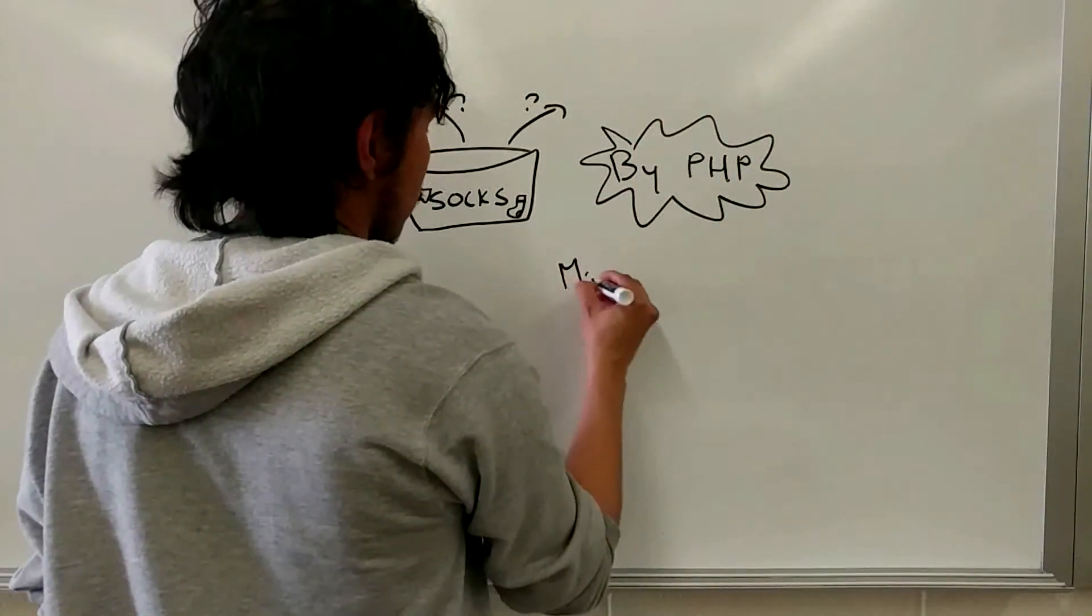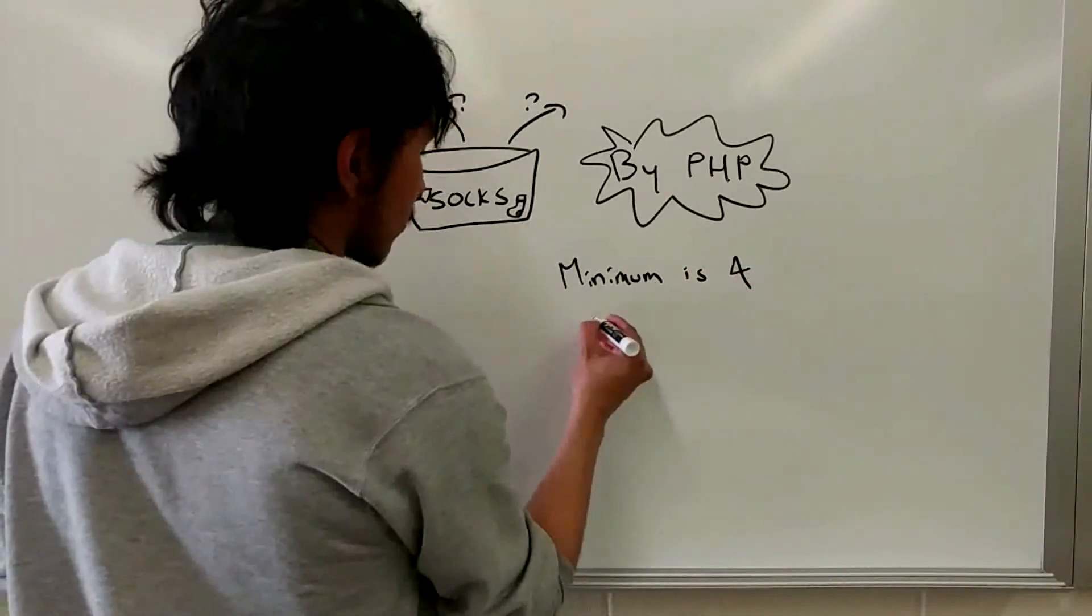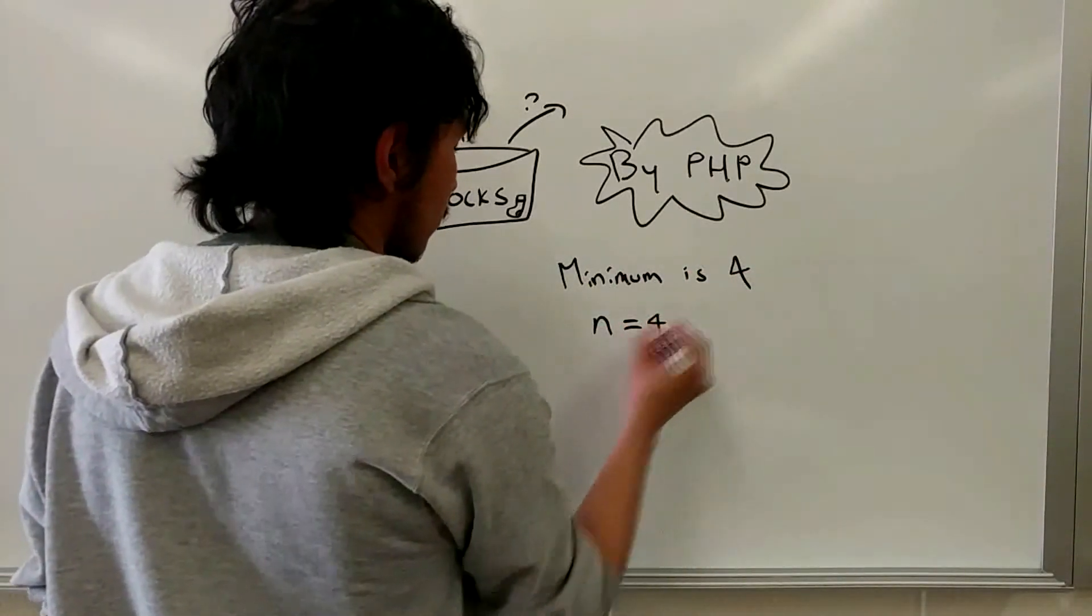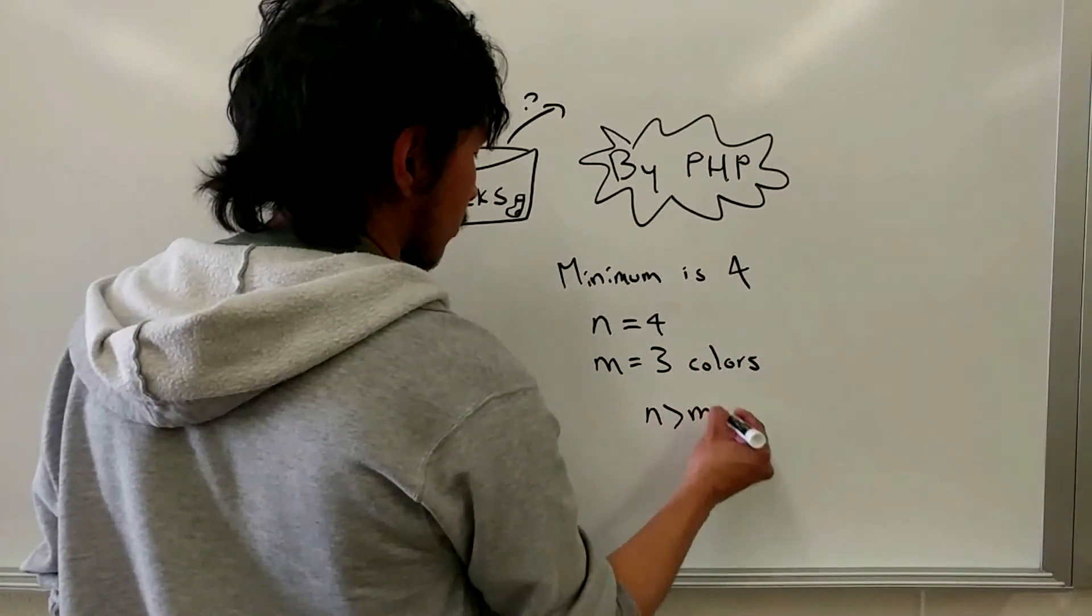Based on the pigeonhole principle, we would need to take out at least four socks to guarantee a pair, where N is equal to the number of socks we take out and M is equal to the colors that are inside the box.